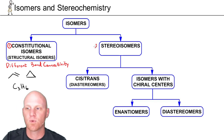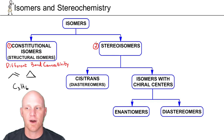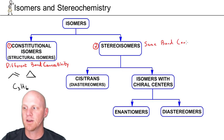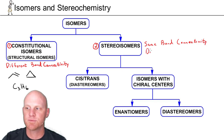Contrast that with what the bulk of the chapter is about, and that's called stereoisomers. These may be a little bit newer. Stereoisomers, in contrast to constitutional isomers, have the same bond connectivity. What's going to be different is the three-dimensional arrangement of the atoms.